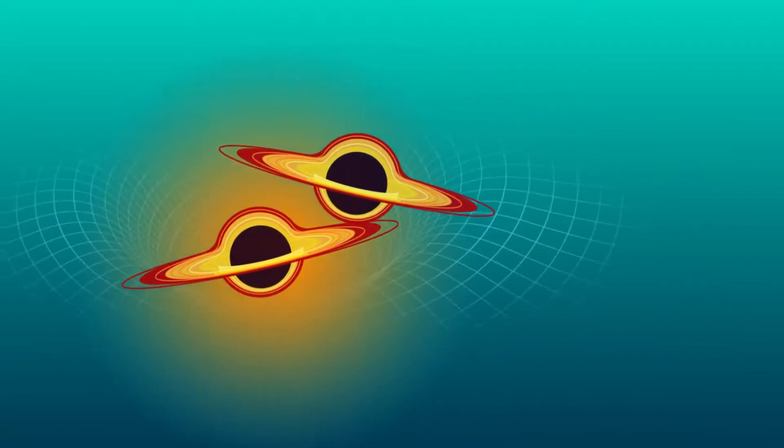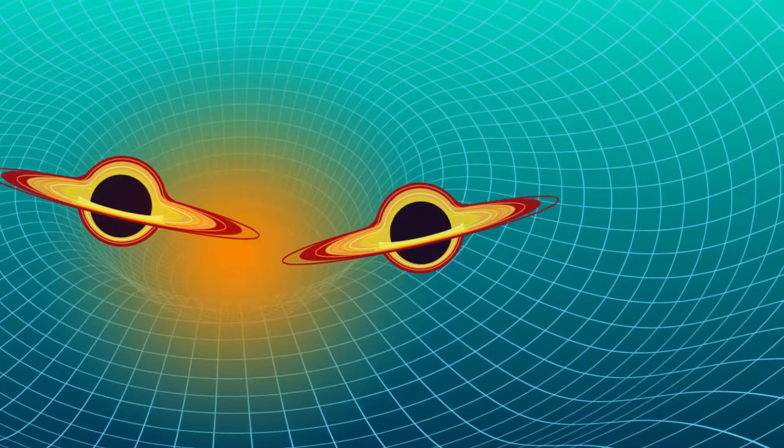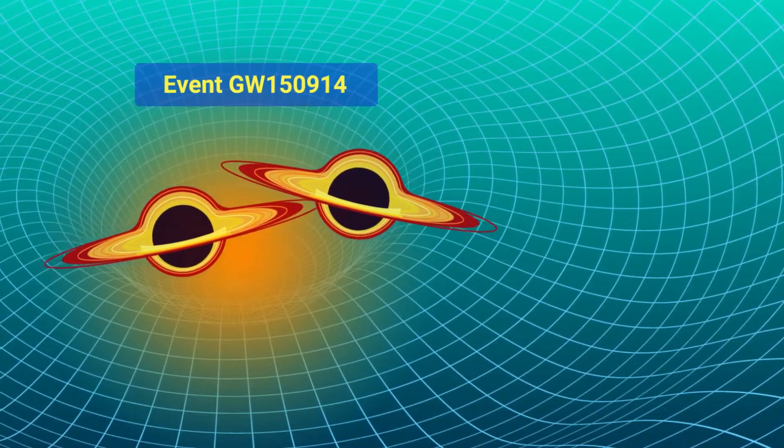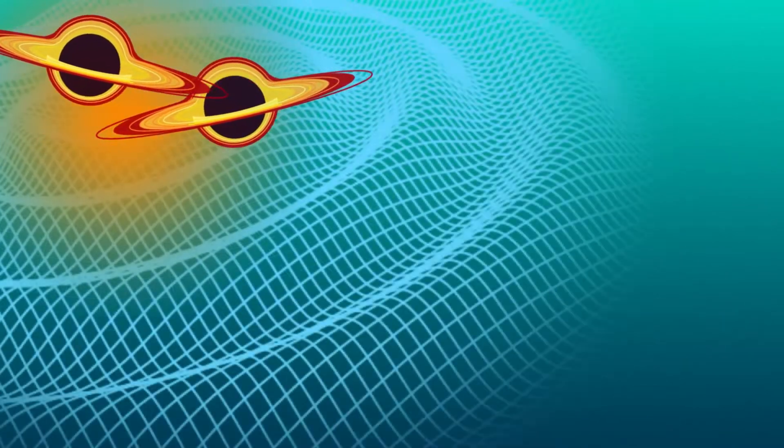The first-ever gravitational waves were directly observed when two massive black holes in close orbit around each other collided to create a ripple in the fabric of space-time.